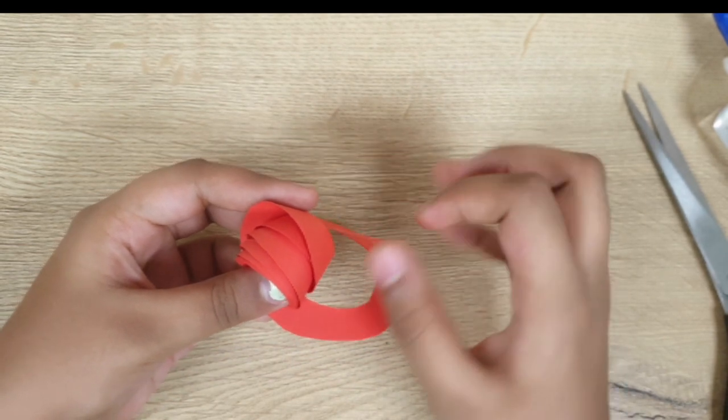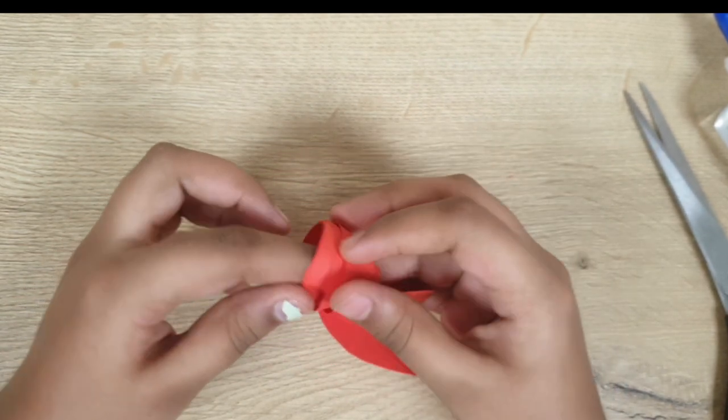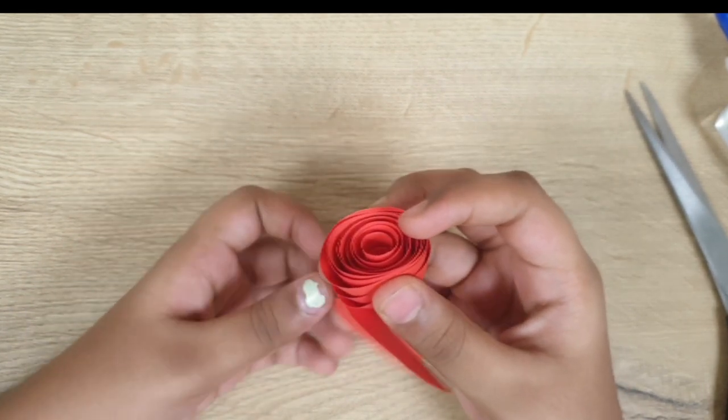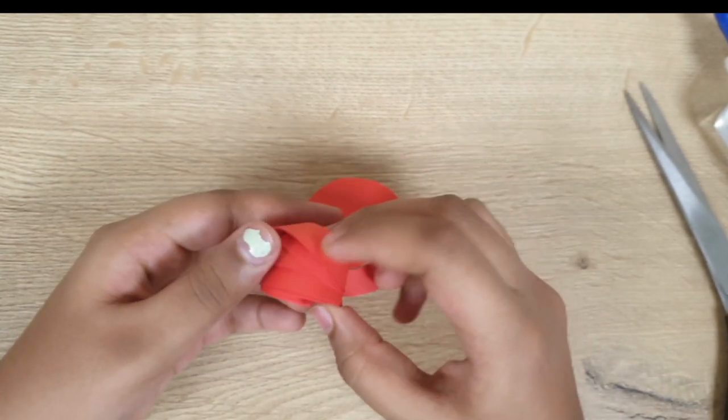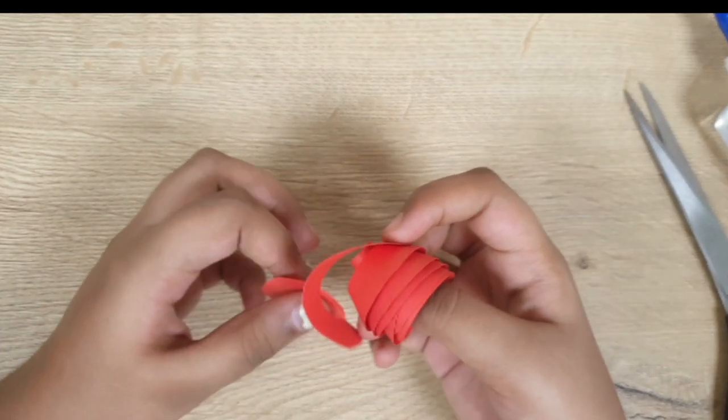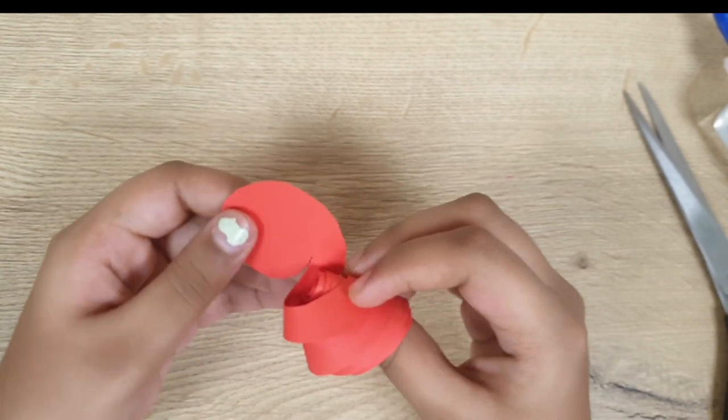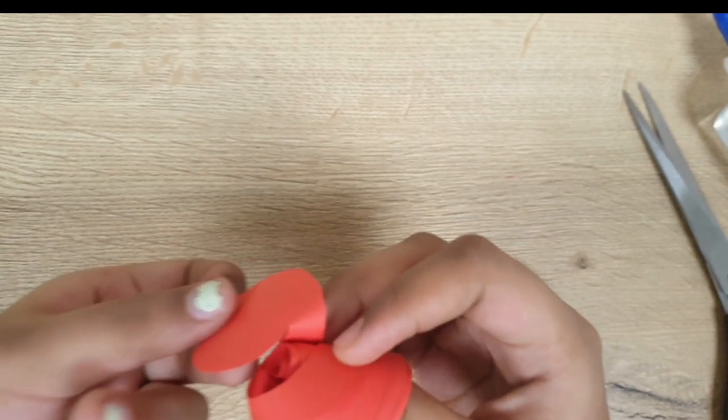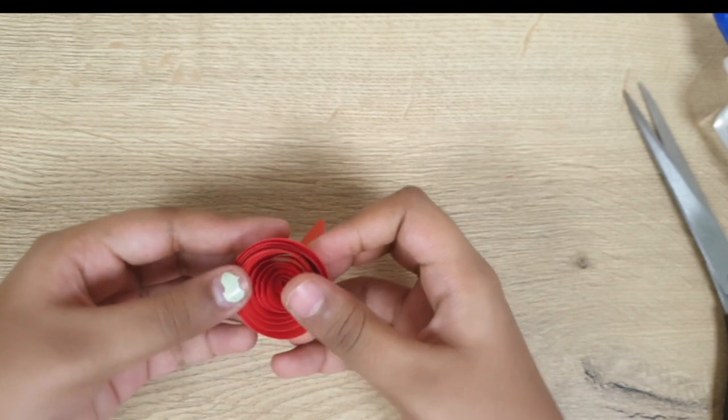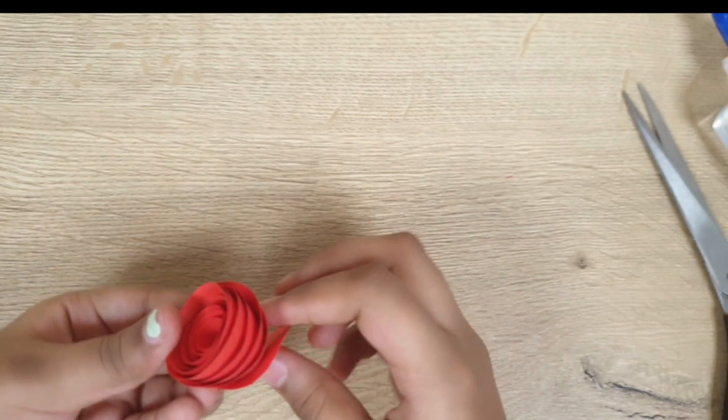This part you should not spiral up with the other rows. Only the other part you have to do that. Okay, only till this end you can see there. Only till that part, and then you get this type of rose.